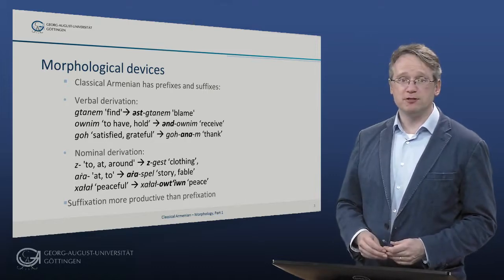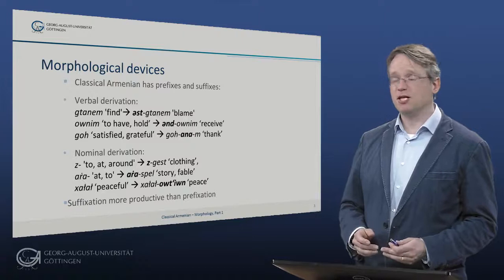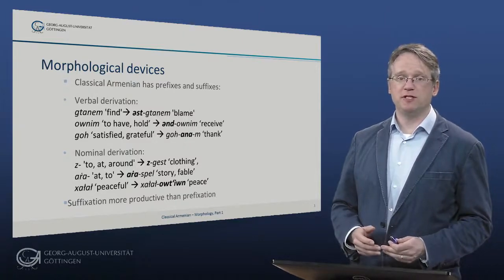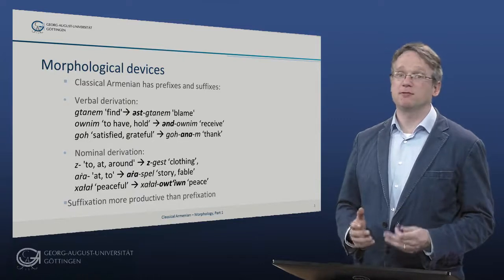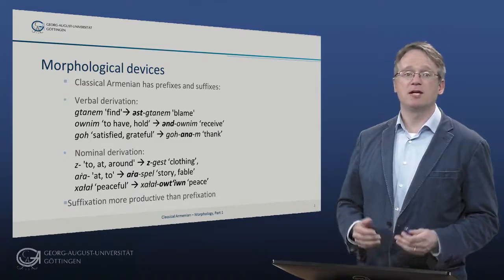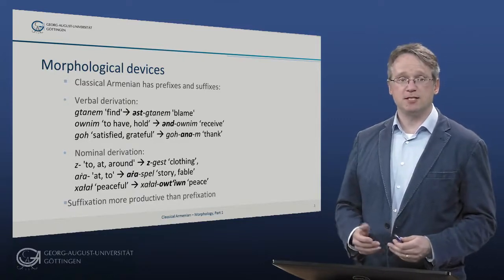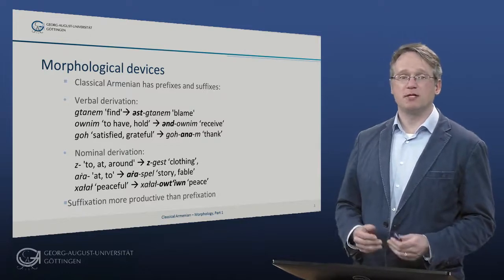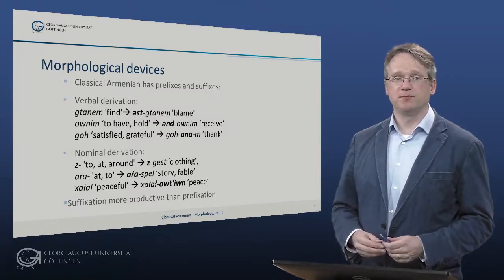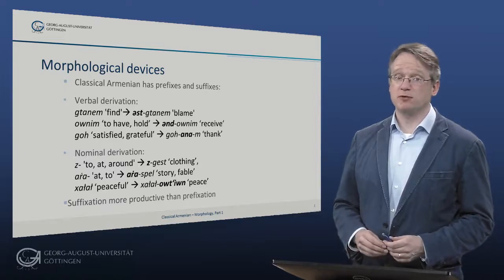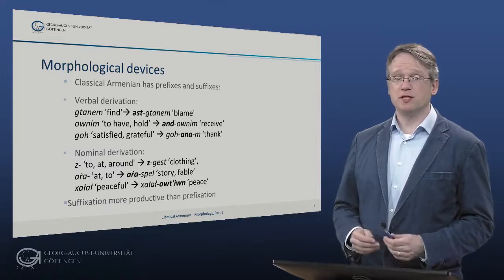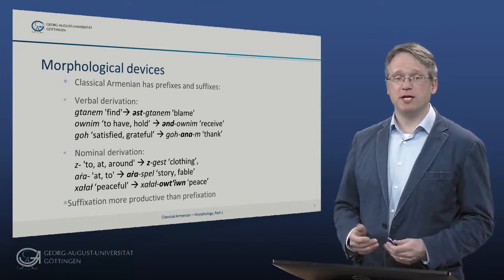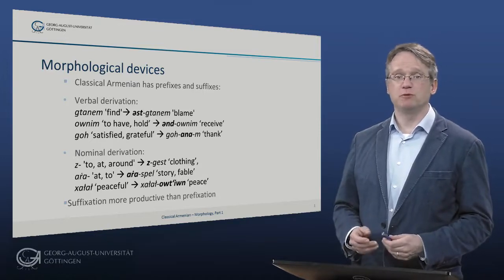In nominal derivation we also have prefixes and suffixes. Examples include ze as a prefix, meaning to, at, around, also used as a preposition – in esgest, clothing. And ara – at, to – in the noun ara-spell, a story, a fable. The most productive suffix for abstract nouns is utyun. For example, the adjective charar – peaceful – and from that we can derive a noun chararutyun – peace.